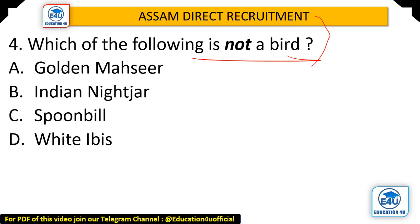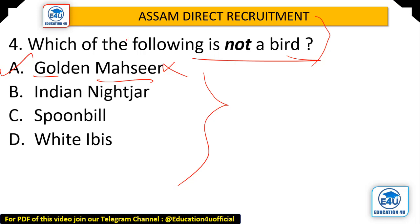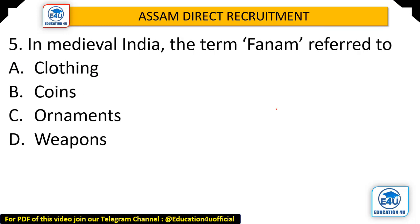Question: Which of the following is not a bird? Options: Golden Machne, Indian Nightjar, Spoonbill, and White Ibis. The answer is Number A — Golden Machne is not a bird. The others — Indian Nightjar, Spoonbill, and White Ibis — are all birds. Golden Machne is actually a kind of fish.